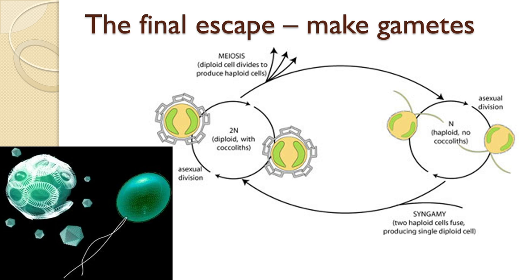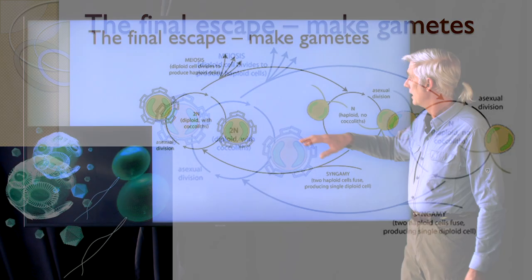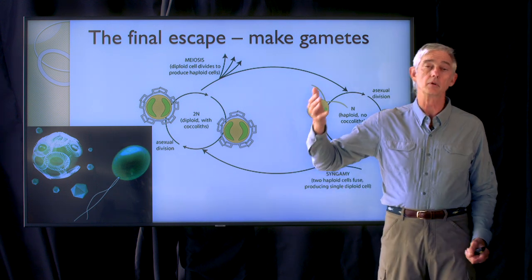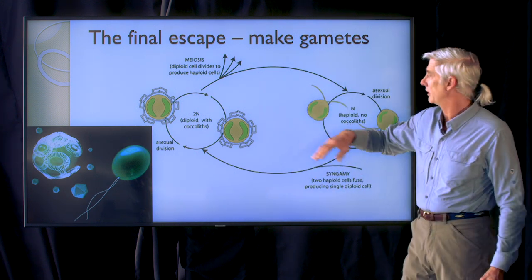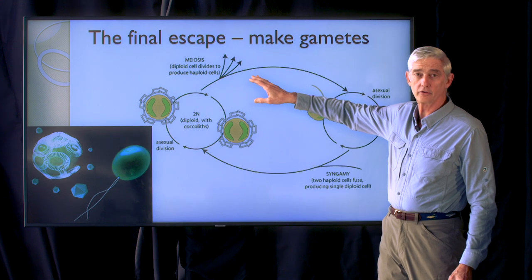Another way that these cells have of responding to a viral infection is to turn themselves into gametes to form the next generation free of viruses. The life cycle of a coccolithophore is that it's a diploid cell surrounded by the coccoliths — those calcareous plates. At a certain signal, for example if the cell gets infected by a virus, it goes through meiosis, halving the number of chromosomes.